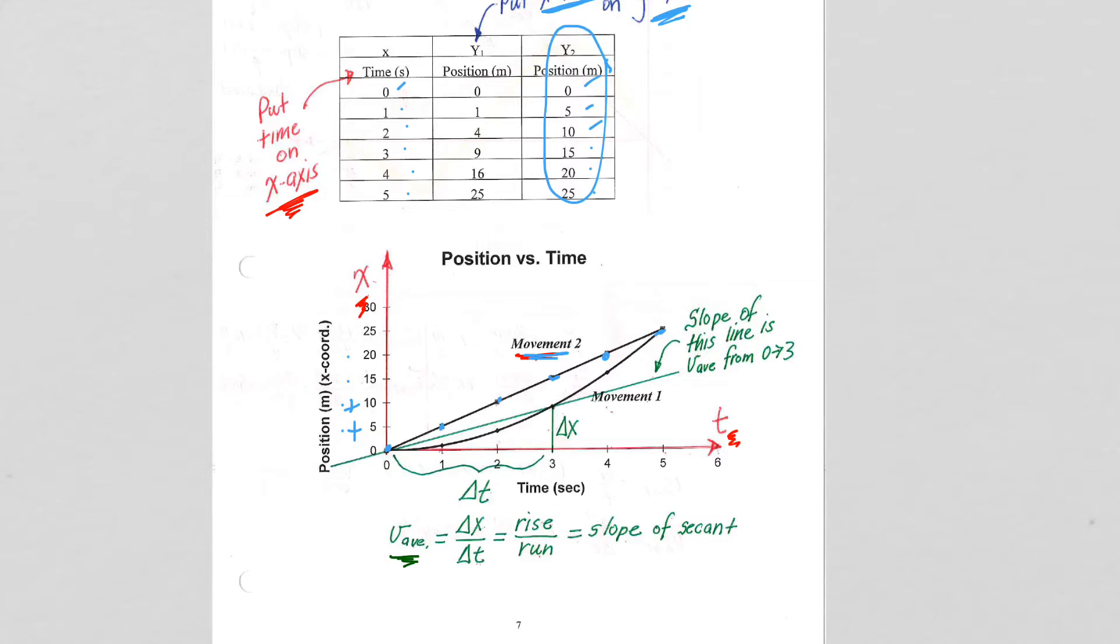We get the average velocity because we have constructed the graph to force us to get the average velocity. We've contrived it. There's no grand mathematical theory as to why the slope of the secant line has to be the average velocity. It's the average velocity because of the way we've constructed the graph, and we've constructed the graph purposefully to match the equation such that when we plot x on the y-axis and look at delta x, we get a rise.